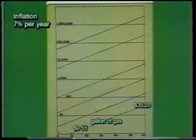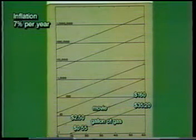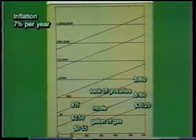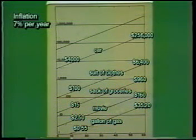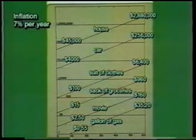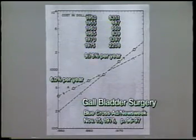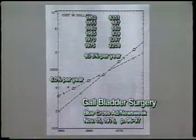The students found that a 55-cent gallon of gasoline would cost 35 dollars; a $2.50 movie ticket would be 160 dollars; a $15 sack of groceries would be 960 dollars; a $100 suit would be $6,400; a $4,000 automobile would be a quarter of a million dollars; and a $45,000 home would be nearly three million dollars. Then I gave students data from a Blue Cross Blue Shield ad in Newsweek showing the cost escalation of gallbladder surgery since 1950, when it cost $351.